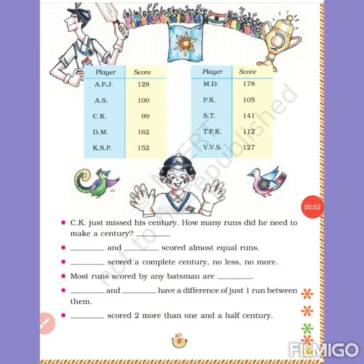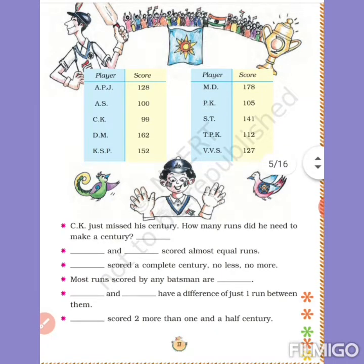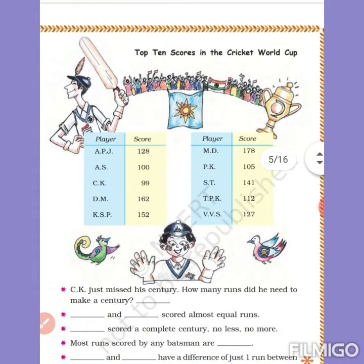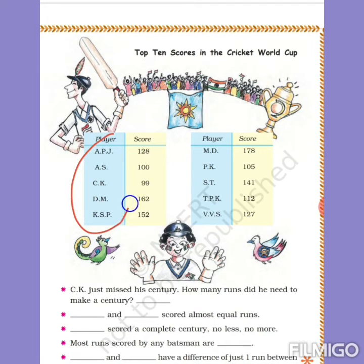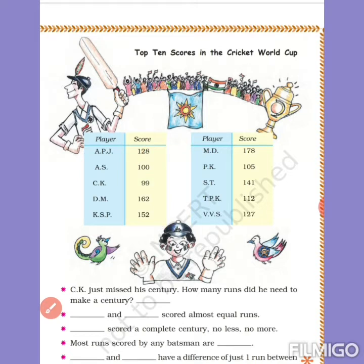Good morning, here we are doing lesson number two - Fun with Numbers. We are on page number 17. You can see the top 10 scores in the cricket world cup. This is a Class 3 mathematics lesson. Top 10 scores are given here, and you can see the player names: APJ, AS, CK, DM, KSP and others. Questions are based on this data - player names and their scores.